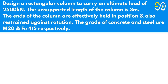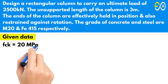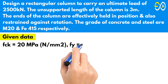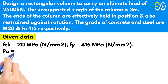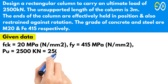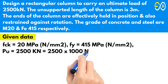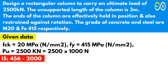Design a rectangular column to carry an ultimate load of 2500 kilonewton. The unsupported length of the column is 3 meters. The ends of the column are effectively held in position and also restrained against rotation. The grade of concrete and steel are M20 and Fe415 respectively. Characteristic strength of concrete equals 20 megapascal, characteristic yield strength of steel equals 415 megapascal, ultimate load equals 2500 kilonewton equals 2,500,000 newton. As per IS code 456:2000.